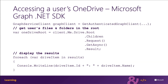For example, to get the current signed-in user's root OneDrive folder with the Microsoft Graph SDK, you would use the code shown here on the slide. You first get an authenticated instance of the Microsoft Graph client, and then call the client.me.drive.root property to get the root folder for the OneDrive. You can then issue a query on the authenticated client by going to the me.drive endpoint and adding additional properties as you see fit.